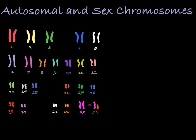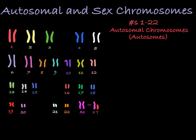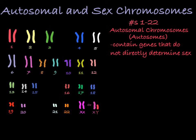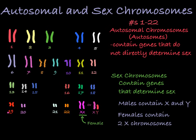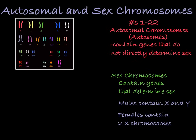As you can see in this image, there are chromosomes that are numbered 1 through 22. These are called autosomal chromosomes, or autosomes. These chromosomes contain genes that are not directly responsible for determining the sex of the organism. These other two chromosomes are the sex chromosomes. Human males have an X and a Y chromosome, while human females have two X chromosomes. So here you can see we have a female karyotype, because we see two X chromosomes where the sex chromosomes are located.